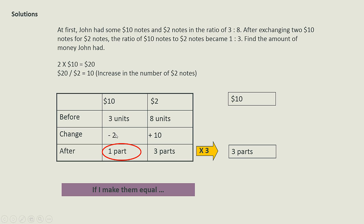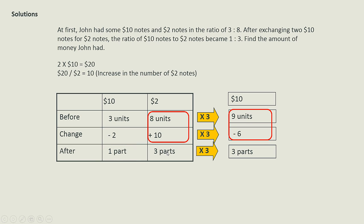And similarly, the minus 2 will need to times 3 to give me minus 6 and 3 units. So once I make this and this the same, 8 units plus 10 must be equal to 9 units minus 6, because both of that represent 3 parts.